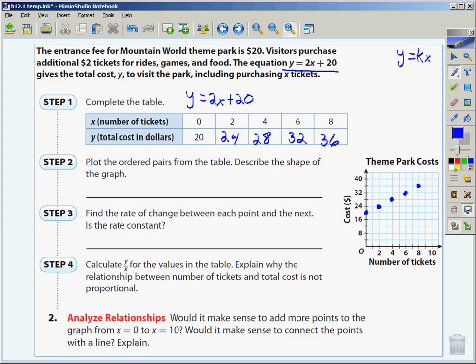It says plot the ordered pairs from the table and describe the shape of the graph. So if I plot 0, 20 would be here. 2, 24 here. 4, 28. 6, 32. And 8, 36. What can you tell me about it? It is going to make a line.